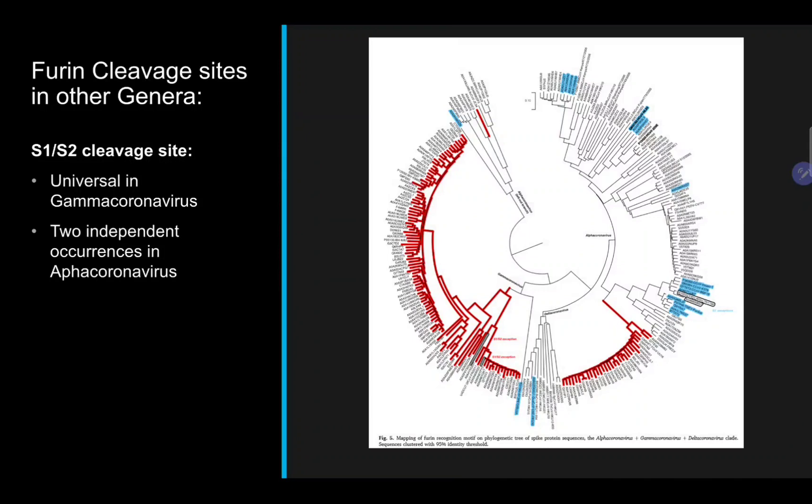This is a really impressive phylogenetic tree, and I really encourage you to look at figure five of the article. Unfortunately, it's too large to see clearly here. Essentially, the figure outlines the S1/S2 cleavage site as universal to the gamma coronavirus genera and occurs twice in the alpha genera as highlighted in red. The blue highlights the S2 prime cleavage site.